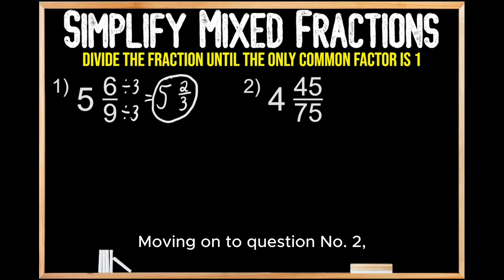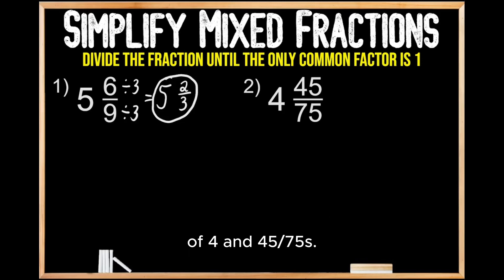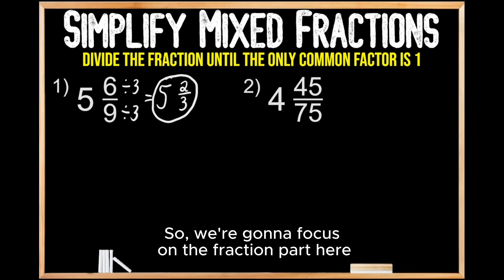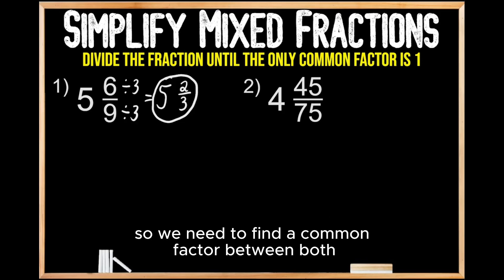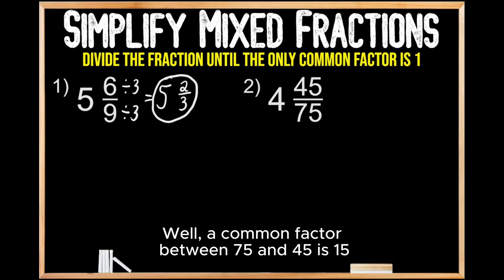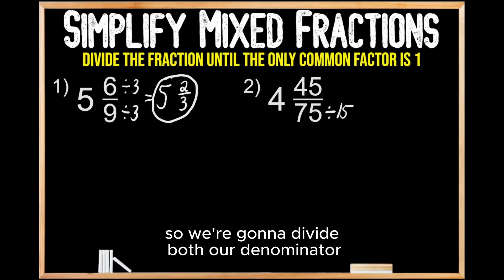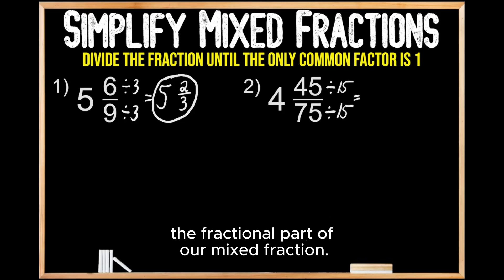Moving on to question number two, where we're being asked to simplify the mixed fraction of four and forty-five seventy-fifths. We're going to focus on the fraction part here because the whole number is not going to change, so we need to find a common factor between both forty-five and seventy-five. A common factor between seventy-five and forty-five is fifteen, so we're going to divide both our denominator and our numerator by fifteen in order to simplify the fractional part of our mixed fraction.